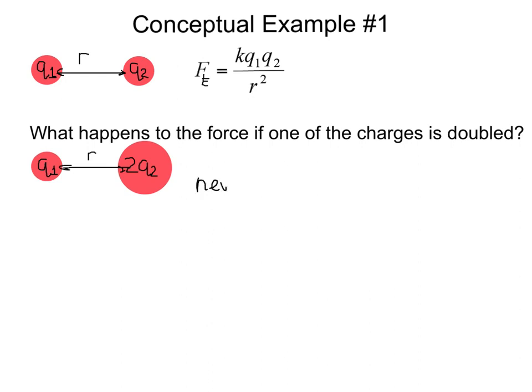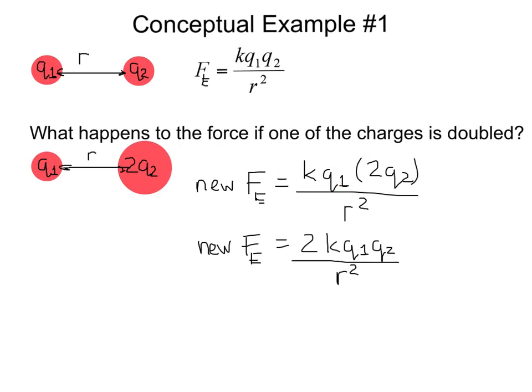Well, the new electric force here is going to be equal to K times Q1, but now times 2Q2, and there's still the same separation, so over R squared. For convenience, let's put the 2 right in front of the K, since this is all multiplication.